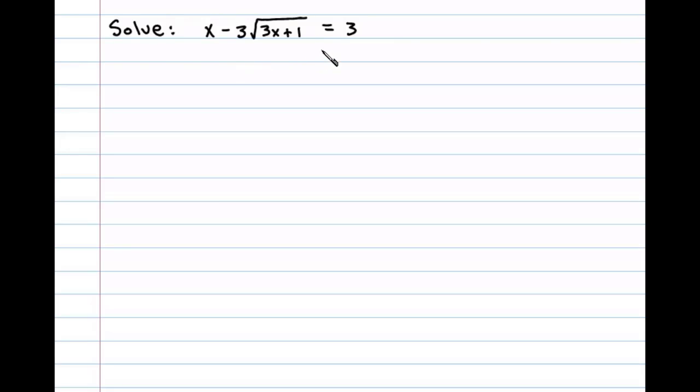Here we're asked to solve a radical equation. Let's begin by isolating this term that involves the square root. To do that, we'll add this term to both sides and also subtract 3 on both sides. Doing that, we'll be left with x minus 3 equals 3 times the square root of 3x plus 1.